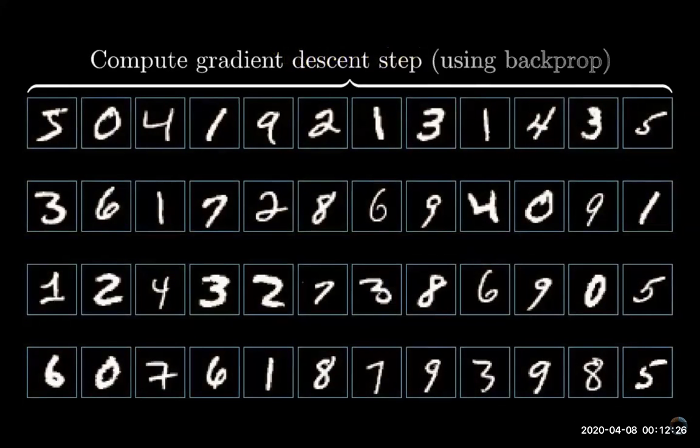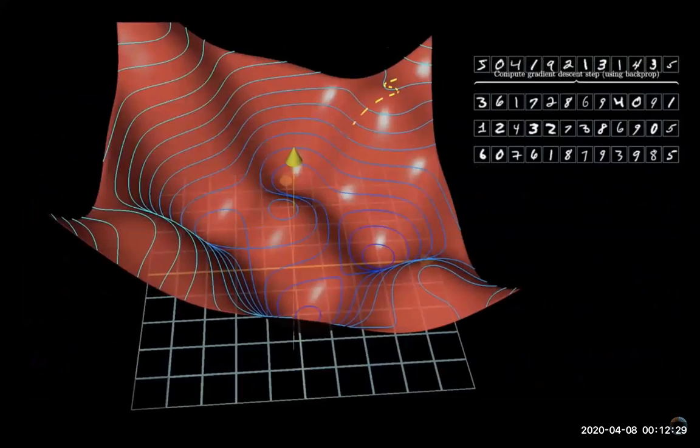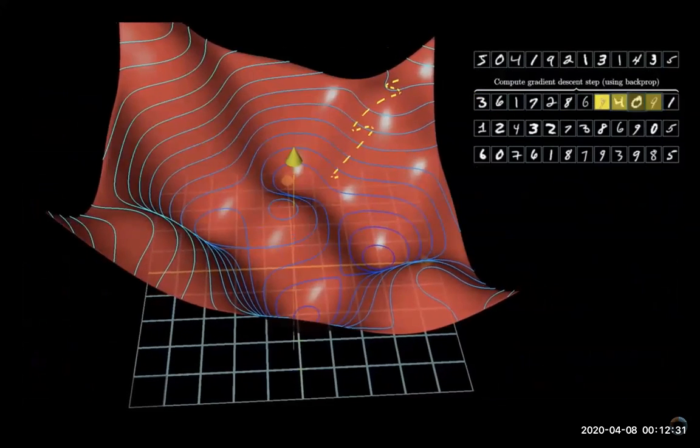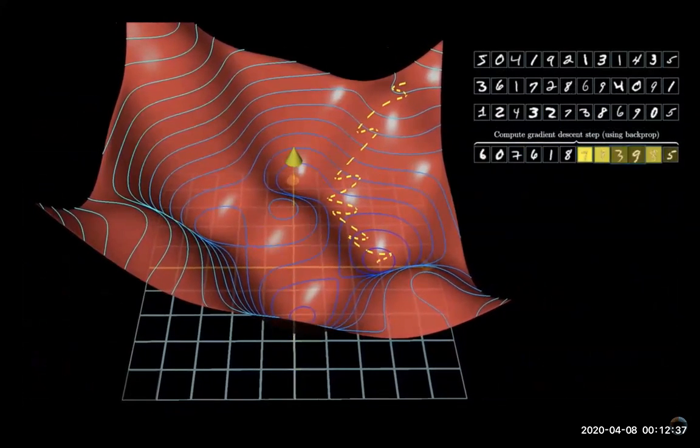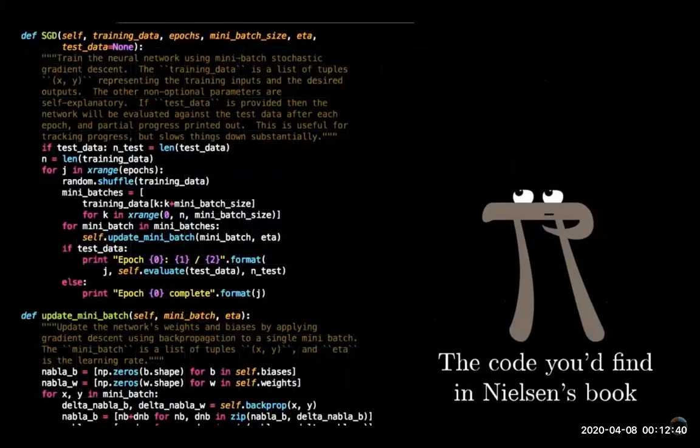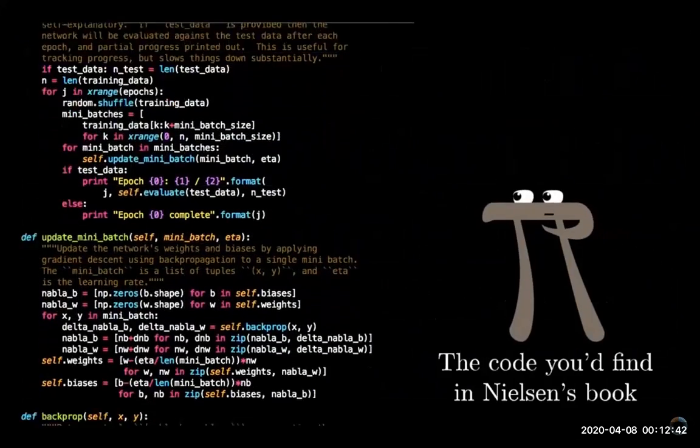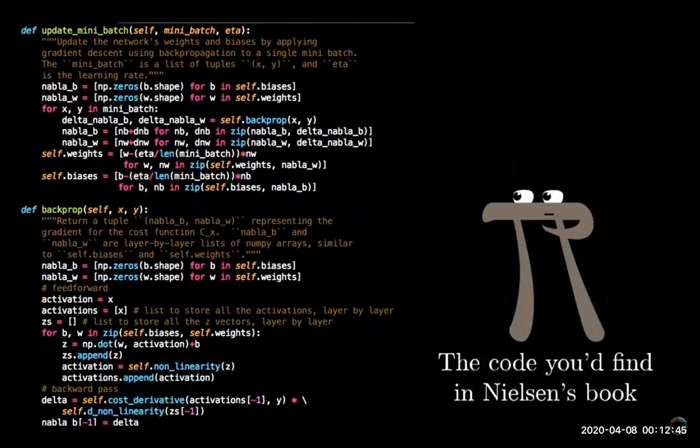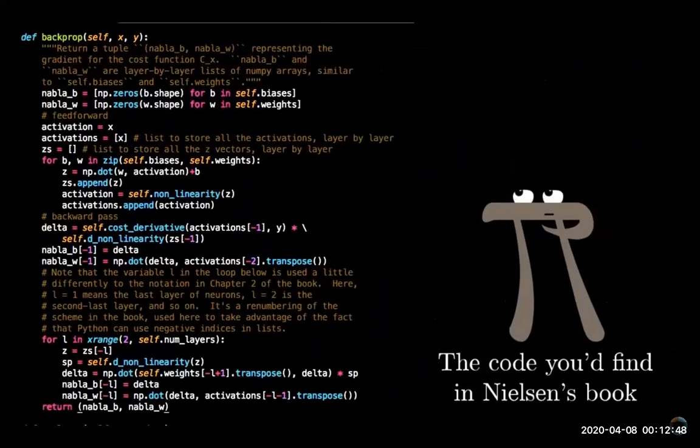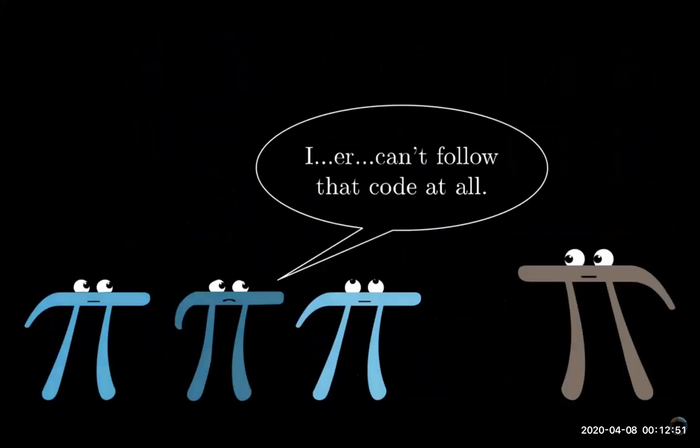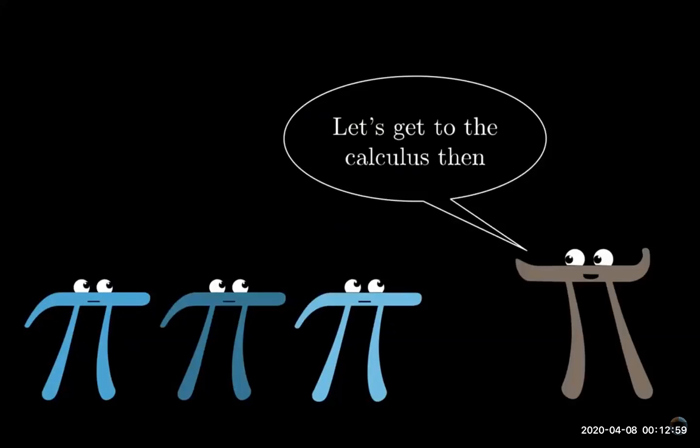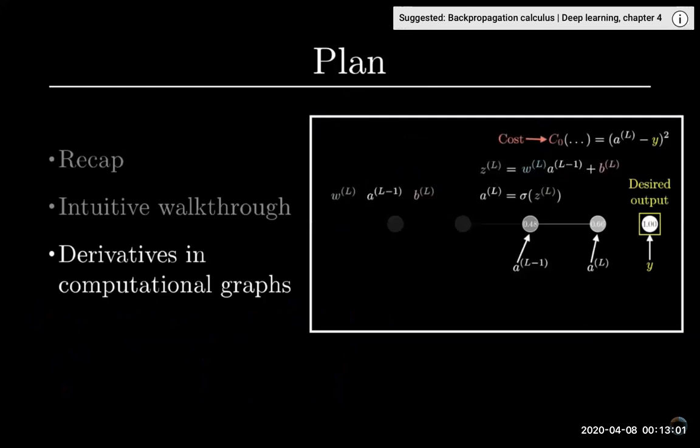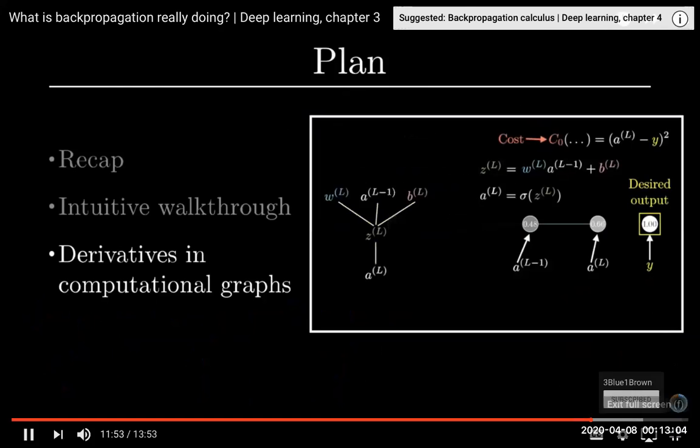Repeatedly going through all of the mini batches and making these adjustments, you will converge towards a local minimum of the cost function, which is to say your network is going to end up doing a really good job on the training examples. So with all of that said, every line of code that would go into implementing backprop actually corresponds with something that you have now seen, at least in informal terms. But sometimes knowing what the math does is only half the battle, and just representing the damn thing is where it gets all muddled and confusing.